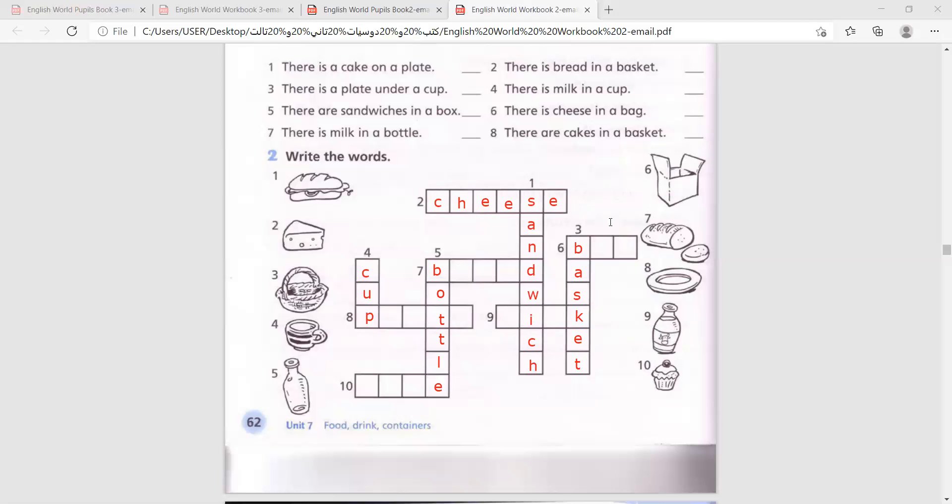Number six, box. B, it's already written, so all we have to do is write O and X. Number seven, bread. B and D are already written, so all we need to do is write R, E, A. Make sure E and A. Bread.